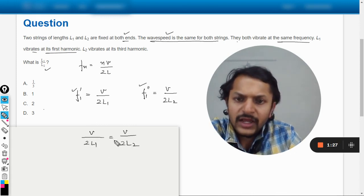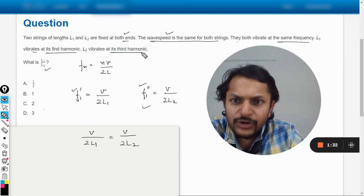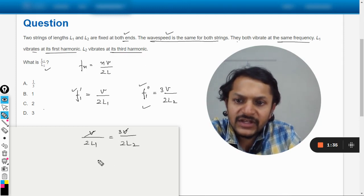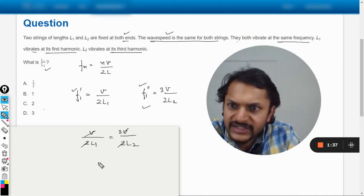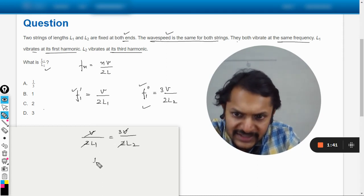And no, I'm sorry, in the second case it is the third harmonic, so there will be three here. Yes, so v and v gets cancelled out, 2 and 2 gets cancelled out. We want to find L1 by L2, just cross multiply this thing.